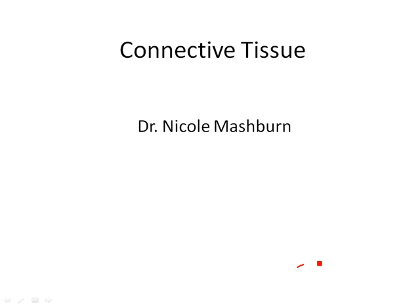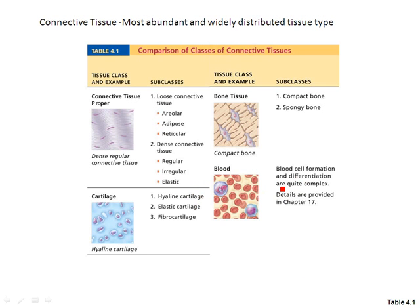I'm going to tell you a little bit about connective tissue. Think of connective tissue basically as the glue that binds us together. There are a bunch of different types of connective tissue. Connective tissue is the most abundant and widely distributed tissue we have. It is everywhere — it connects us.